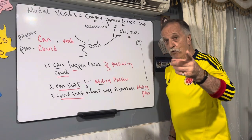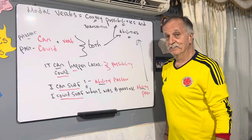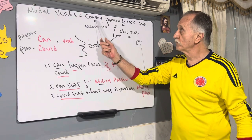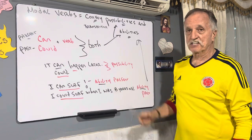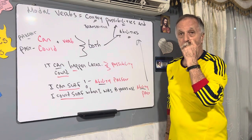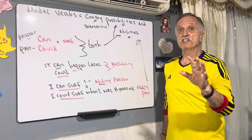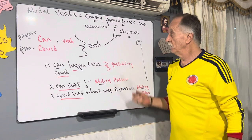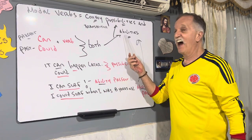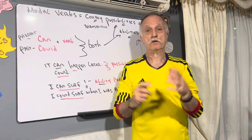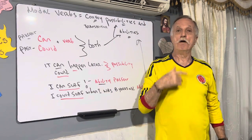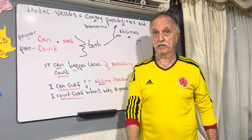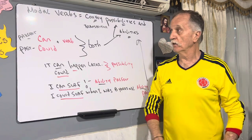Hi, how are you? Hello again, Colombia. Modal verbs convey — you know — possibility: may and might. Here's another possibility modal verb, but also abilities. It's a combo, two things: ability and possibility.